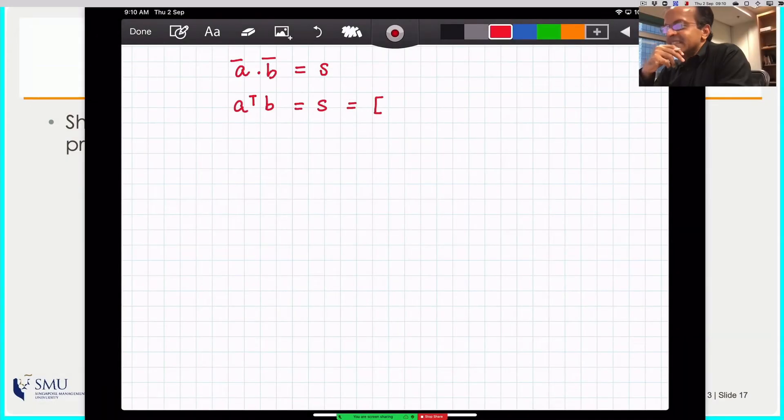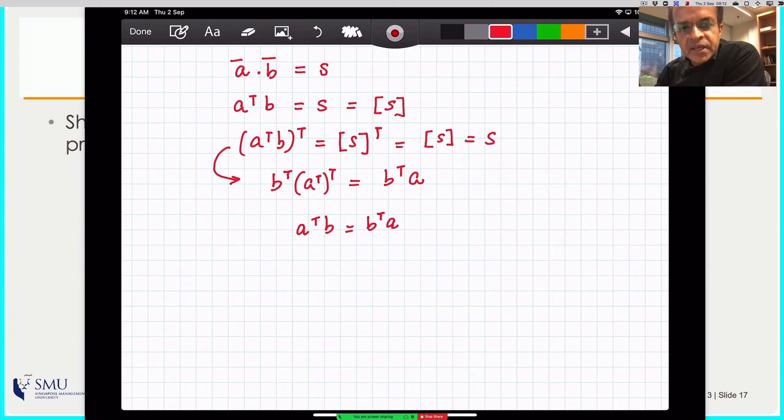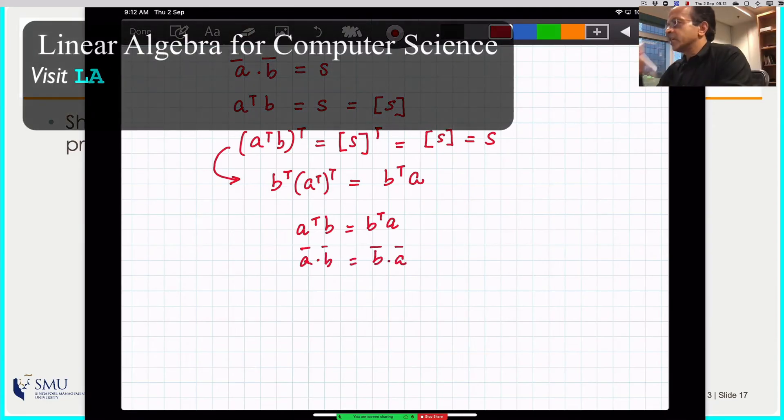a dot b is a scalar so we showed you last week that a dot b is actually a transpose b. That's a scalar s, is a one by one matrix. So if this is true then if you take transpose on both sides that should be equal. So if I take a transpose b the whole thing transpose will have to be the matrix s transpose. On the left hand side you can apply the product rule of transposes which means it's going to become b transpose times a transpose the whole thing transposed again, that is b transpose a. So you can see that a transpose b is the same as b transpose a where a and b are column vectors. Which is another way of saying a dot b is the same as b dot a. That's the proof.